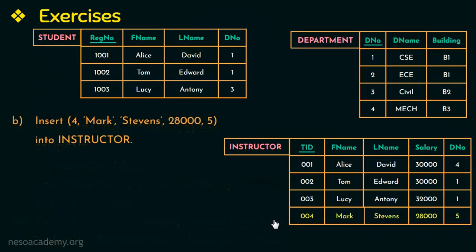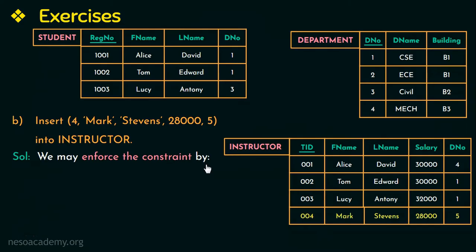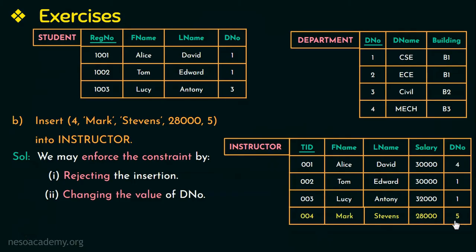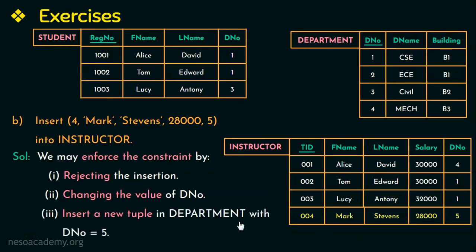To enforce the referential integrity constraint, there are three options. The first, default option is to reject the insertion. The second option is to change the D number value in the new tuple to one already present in the department relation. The third option is to first insert a new tuple in the department relation with D number equal to 5, and then accept the insertion.